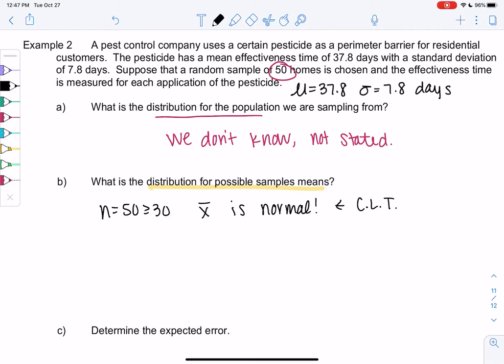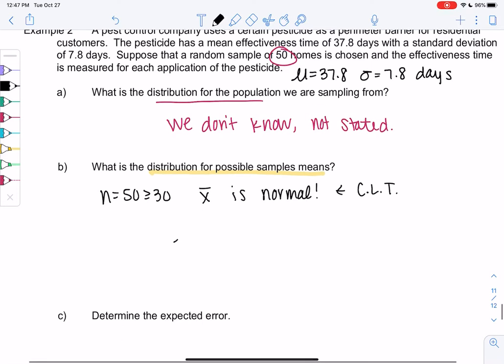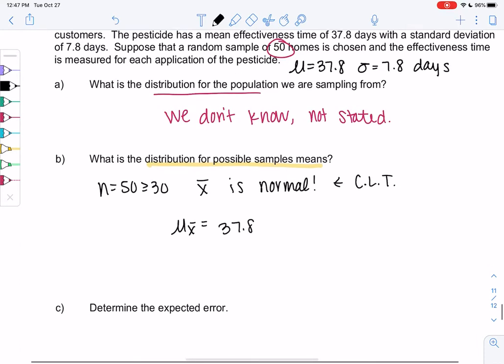Let's find the average and standard deviation. The average is still 37.8. The standard deviation changes. We take the original standard deviation and divide by square root n, so 7.8 divided by square root 50, and you should get 1.1031.